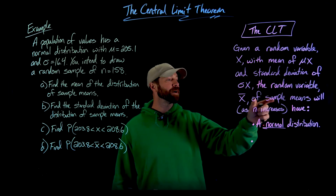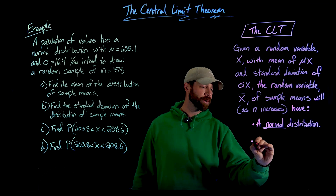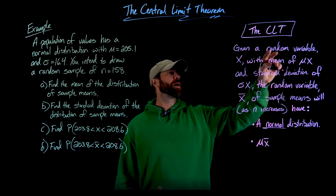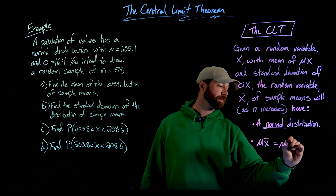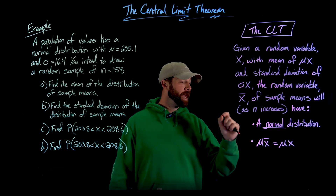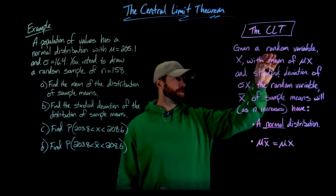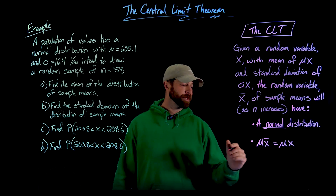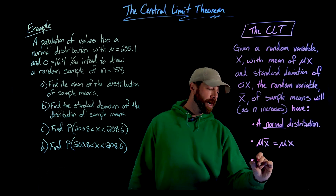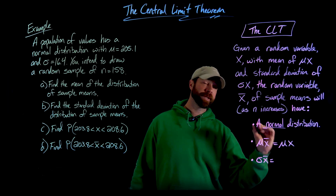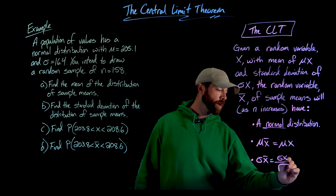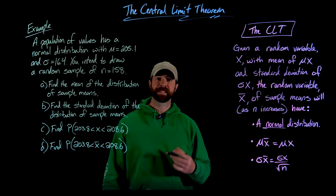The two things that we get: first of all, the mean of the distribution of sample means, which we'll denote as mu_x_bar, is equal to the mean of the original random variable. And to find the standard deviation of the normal distribution of sample means, we take the original standard deviation of our random variable and divide that by the square root of n, where n represents the sample size.